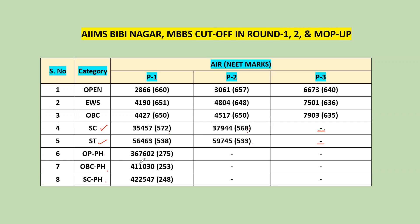Physically handicapped PWD, physically disabled students, OBC and BC candidates. OBC is non-creamy layer; that is the creamy layer distinction. We have open categories and OBC. OC-PH — as you can see, there are three categories of PWD candidates who are allowed a seat. When you select this, you can click on the notifications, then click on the seat matrix. In the seat matrix, you can see where you have a seat.